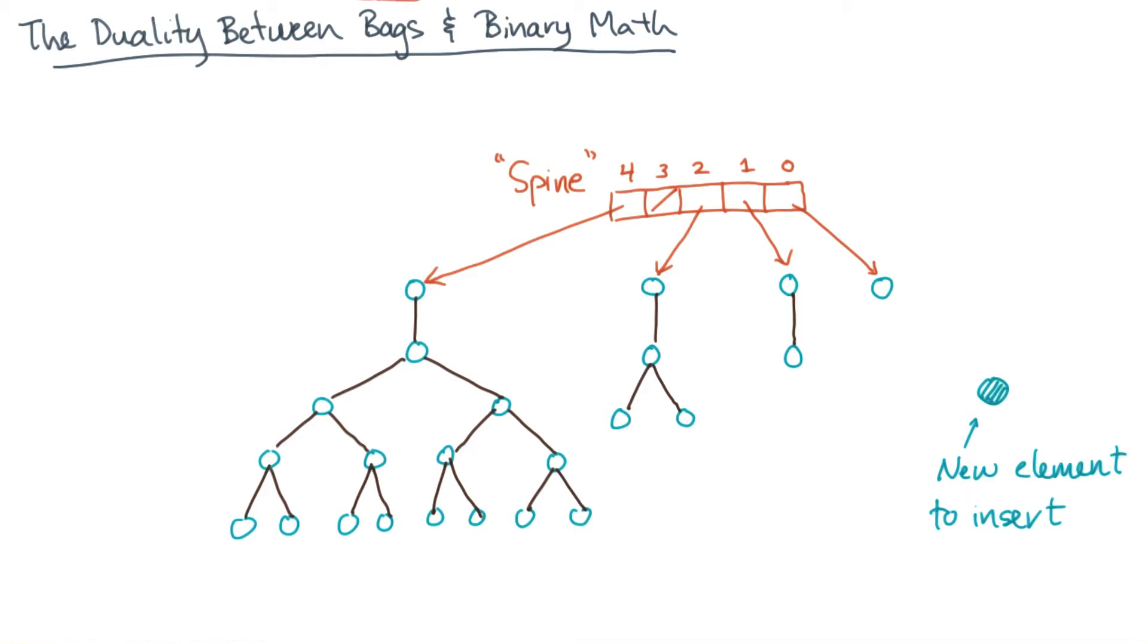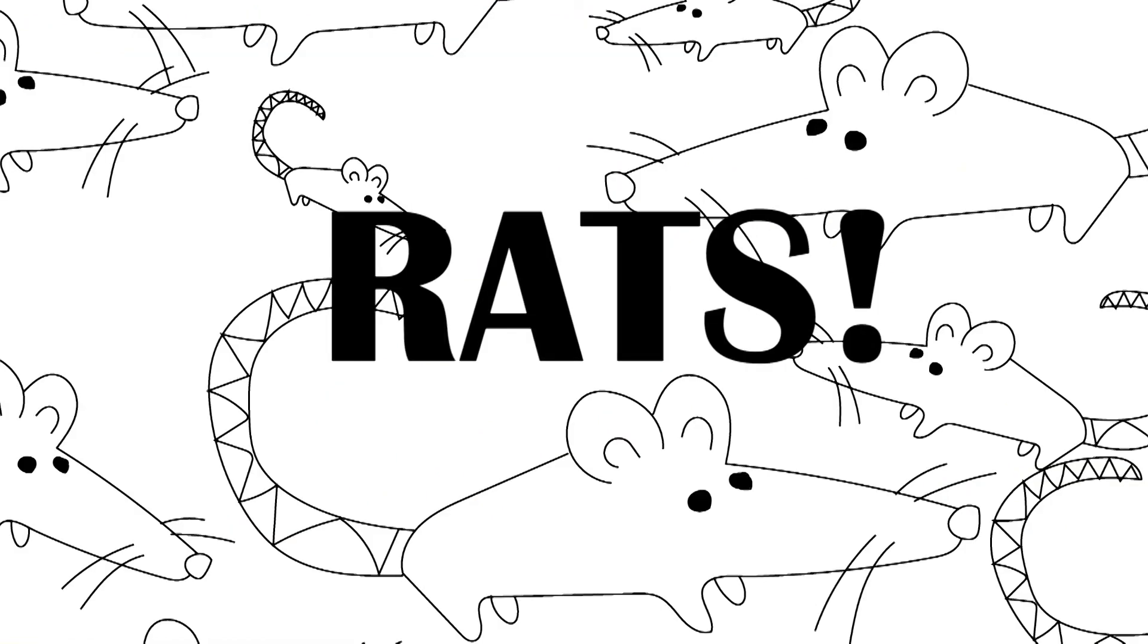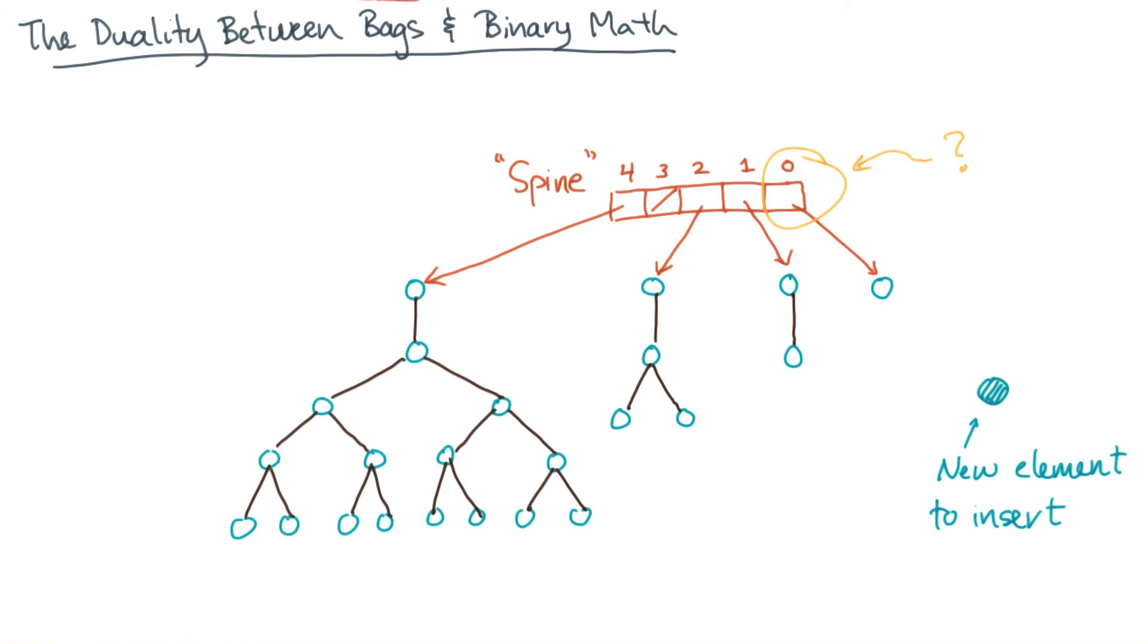First, try to put it into the least significant bit of the spine. Rats, there's already a pennant there. Okay, no big deal, let's create a new pennant of twice the size. The only gotcha now is that this pennant is in the wrong place. It's trying to occupy a slot along the spine for pennants of size 1. So we'll need to carry it into the next slot and replace the current slot with a null pointer.